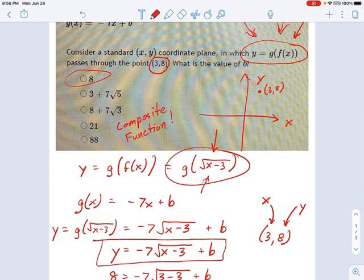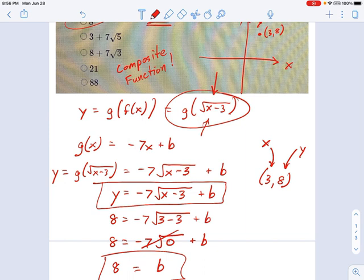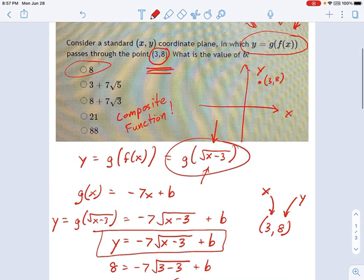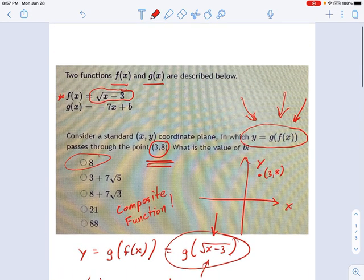And once we had that equation, ugly as it was, we just took the coordinate point, 3 comma 8, and plugged it into that equation. That's called evaluating a function at a point. And that led us to this thing right here, 8 equals b. And every time you face this particular problem, you would just do it that way. This is going to give you practice at not only evaluating a composite function, it's also going to give you practice evaluating functions at a particular point. So it's kind of a two-for-one.